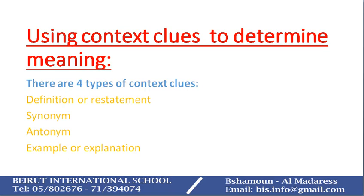The third type of context clues is using antonyms, and by antonyms we mean opposite words. If I don't know the meaning of a word but I know the opposite of it, in this case I can directly understand the meaning of the difficult word I come across.